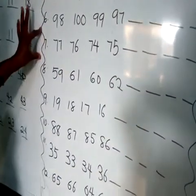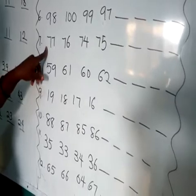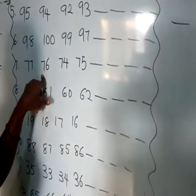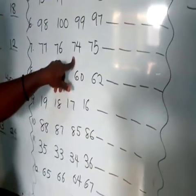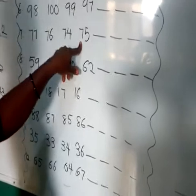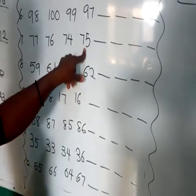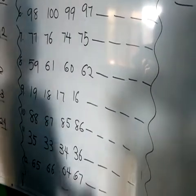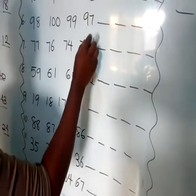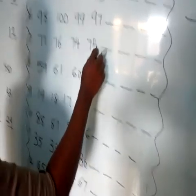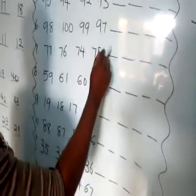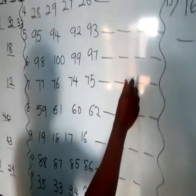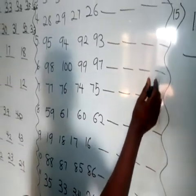Number 7: we have 77, 76, 74, and 75. Which one comes first? We have 74 as our first number. Let's go: 74, 75, 76, and 77.